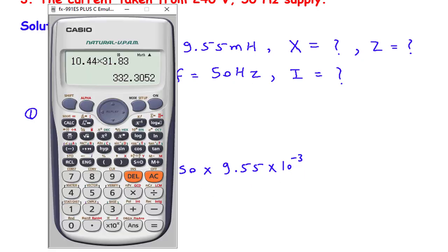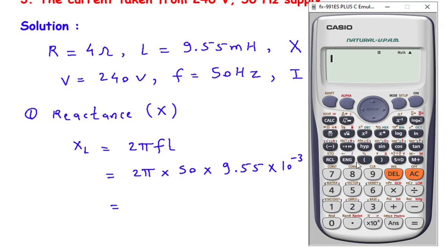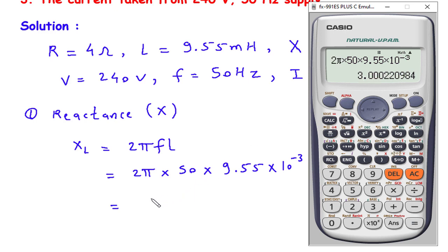Now if we solve this, so this will be 2π multiplied by 50 multiplied by 9.55 multiplied by 10 to the power minus 3. It is 3. So therefore, the value of XL is equal to 3 ohm. This is the value of inductive reactance.